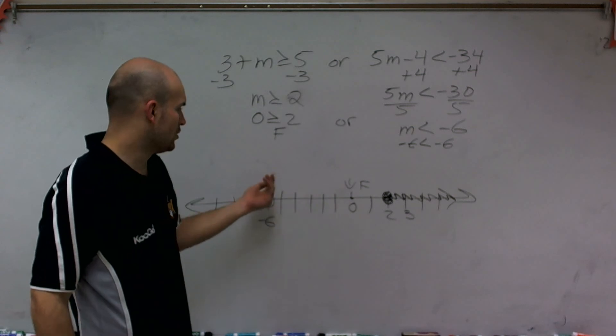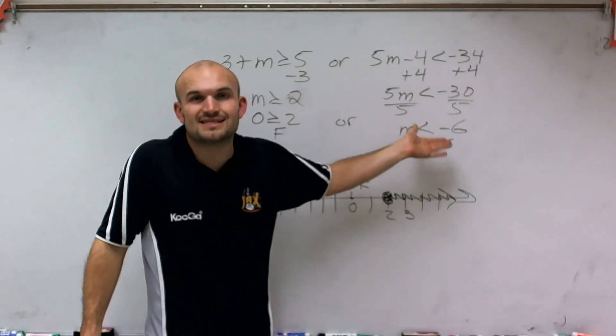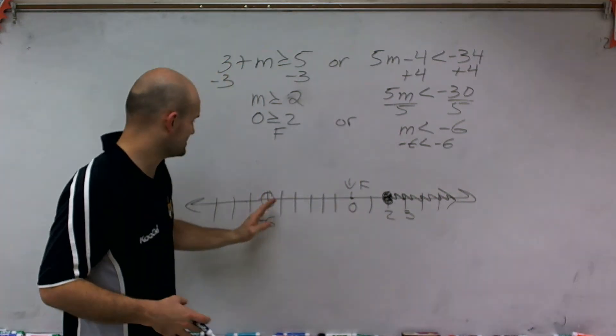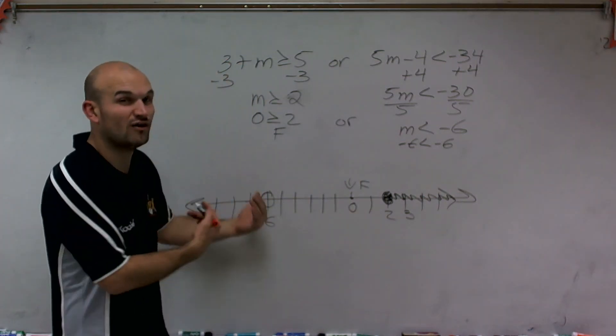Now, we go over and look to negative 6. It says m is less than negative 6. That means all numbers that are less than negative 6. Well, that's going to be negative 7, negative 8, negative 9. All values to the left. But again, it's always nice to test your work by doing a test point.